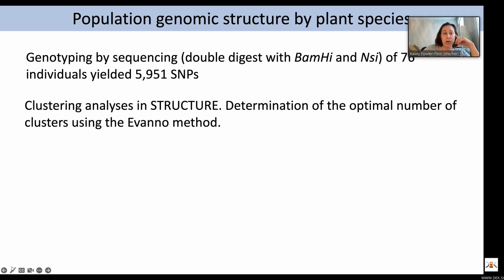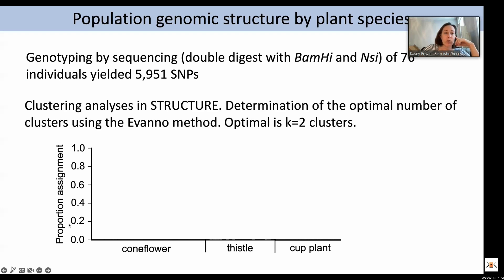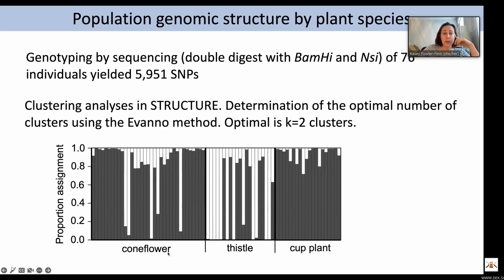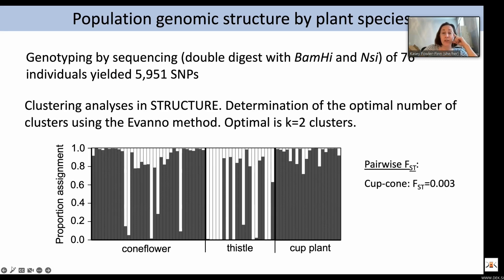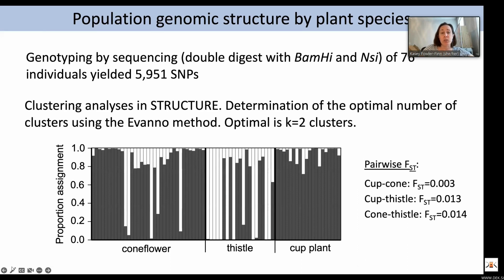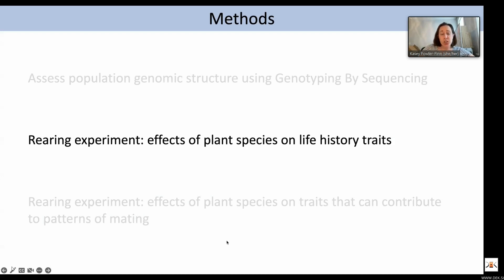We found that the optimal number of clusters is two, meaning two genetic groups is the best explanation of genetic variation in the population. Graphically, you have the proportion assignment to each of the two genetic clusters on the y-axis and individuals from each of the three host plants on the x-axis. Coneflower and cup plant individuals are assigned to the same genetic cluster most of the time, while thistle individuals look quite different. Pairwise FST values show very little genetic difference between cup plant and coneflower individuals, but much greater genetic differences between thistle and the other two plants.